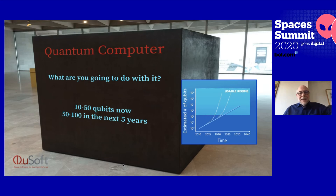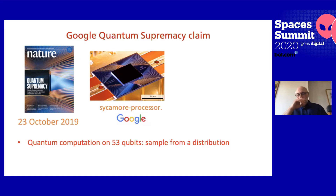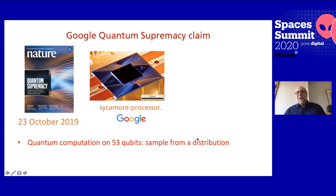To put even more interesting points on the table: last year, end of last year, Google came out with a beautiful paper in Nature, which they called quantum supremacy. What they did is — they're very rich, as you know — they built a quantum computer that consists of 53 qubits. And what they did was they could sample from some distribution. It's not a very interesting problem that they solved. Nevertheless, they claimed that if you wanted to do this same thing on an ordinary computer, even on a supercomputer, you would need at least 10,000 years to establish the same thing.